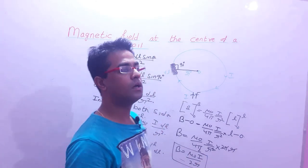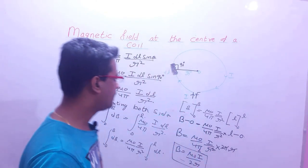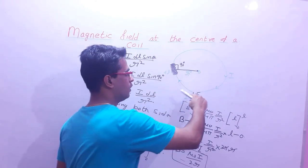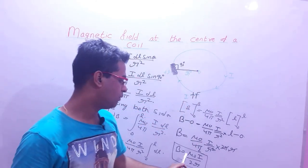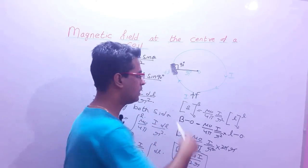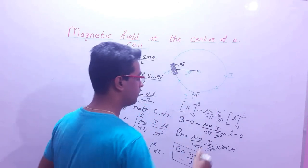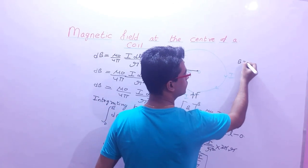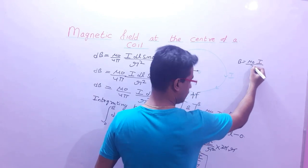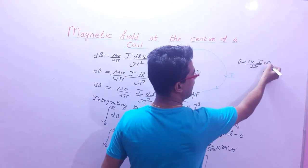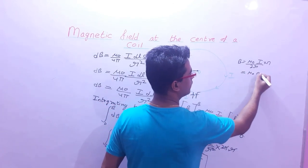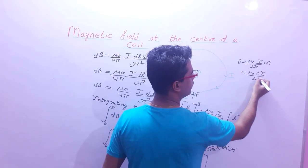This will be the magnetic field at the center of a current carrying coil having radius r: B = μ₀I/2r। अब अगर N turns हों, तो B = μ₀I/2r · N। N से multiply कर दो — the final formula will be B = μ₀NI/2r।